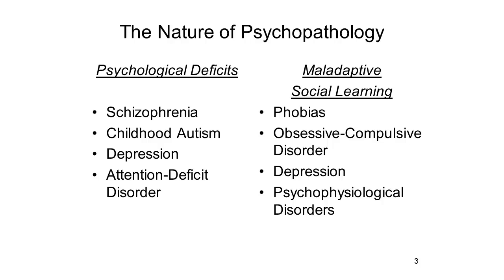Presumably these illnesses are fundamentally somatogenic in nature. But the symptoms we see in phobias, obsessive compulsive disorder, other forms of depression, and the psychophysiological disorders seem to have their origins in an experience of maladaptive social learning. So instead of having somatogenic or psychogenic theories of mental illness in general, what we really want to be thinking of are somatogenic or psychogenic theories of particular forms of mental illness.